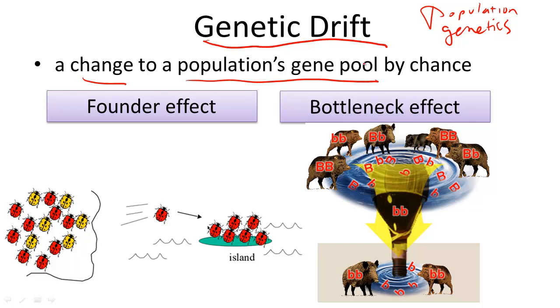If you can recall, alleles are simply the different versions of a trait in your DNA on homologous chromosomes. This could be for eye color, hair color, height, etc.